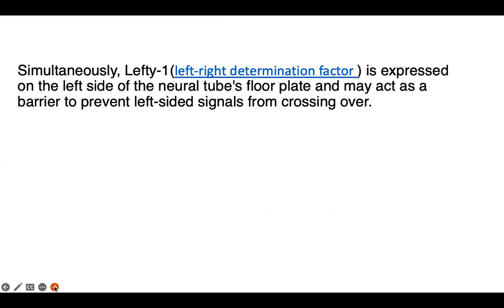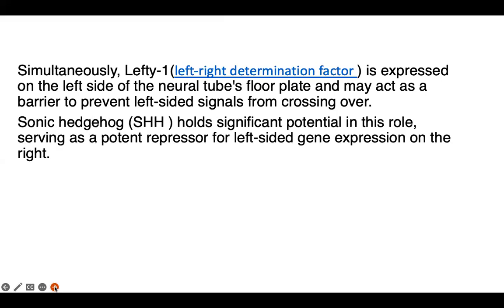Simultaneously, Left1 — the left-right determination factor — is expressed on the left side of the neural tube's floor plate and may act as a barrier to prevent left-sided signals from crossing over. Sonic hedgehog (SHH) holds significant potential in these roles, and serves as a potent repressor of left-sided gene expression on the right side.